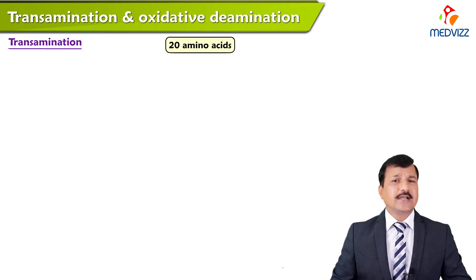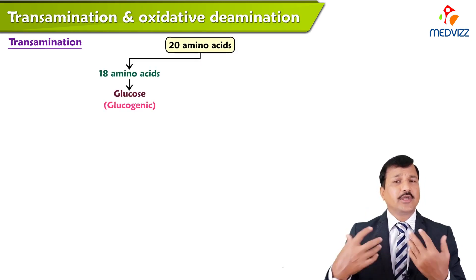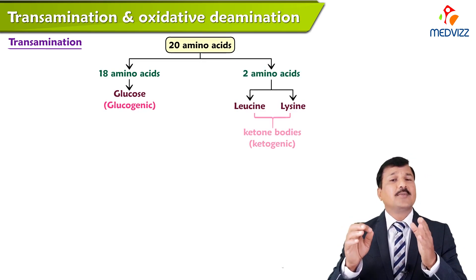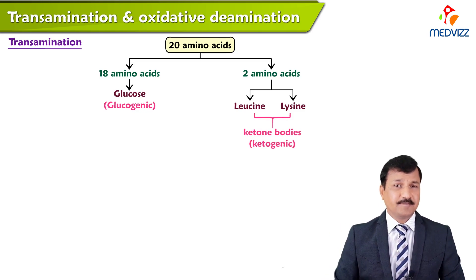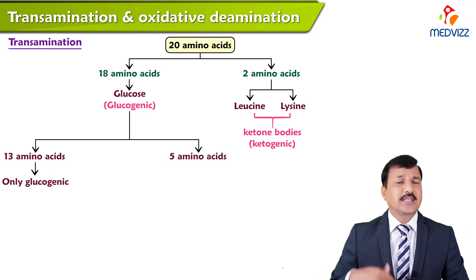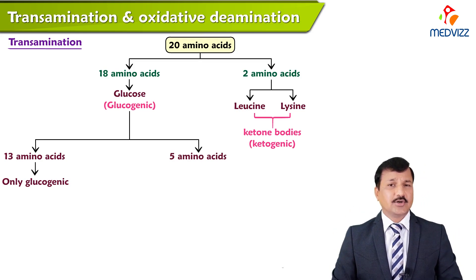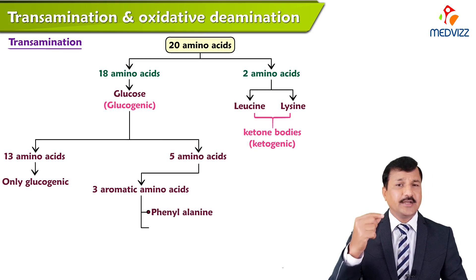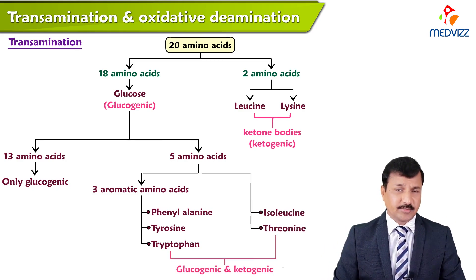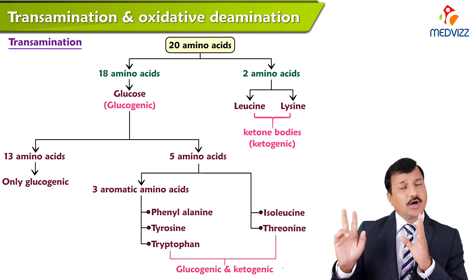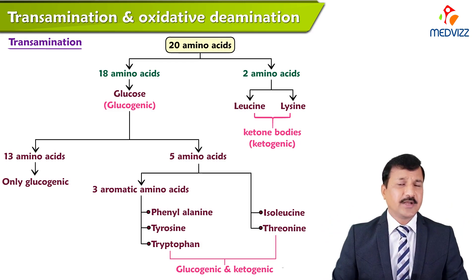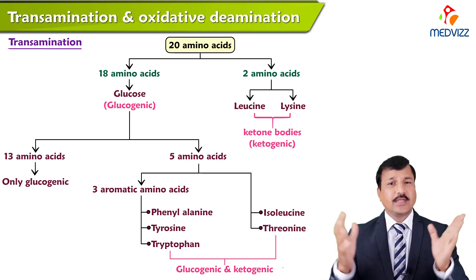Out of 20 standard amino acids, 18 of them can make glucose by going through the gluconeogenesis process. Only two amino acids — leucine and lysine — will make ketone bodies, so they are ketogenic. The remaining 18 are glucogenic amino acids. Within this, there are five amino acids that can make both glucose and ketone bodies: the three aromatic amino acids phenylalanine, tyrosine, and tryptophan, plus isoleucine and threonine.